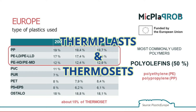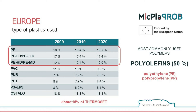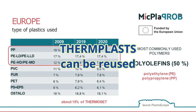Thermoplasts are those materials that can be reversibly transformed, which means that they melt when heated and harden after cooling. Therefore, they can theoretically be reused for an indefinite period of time.